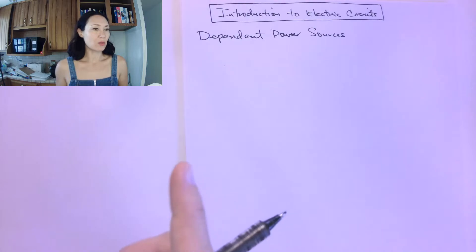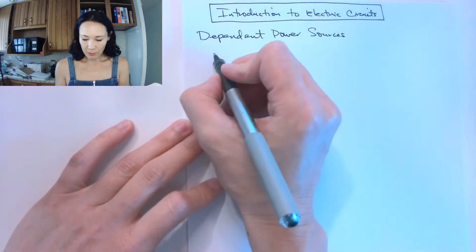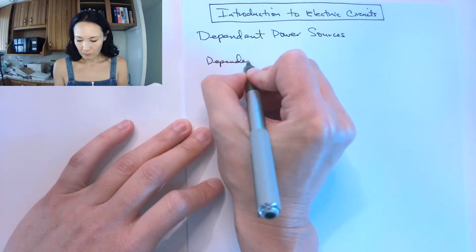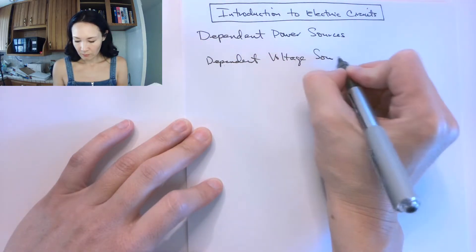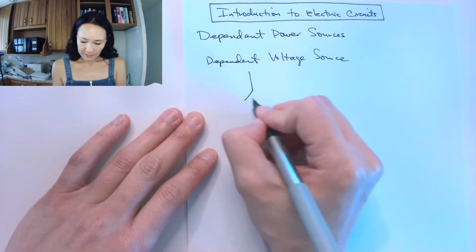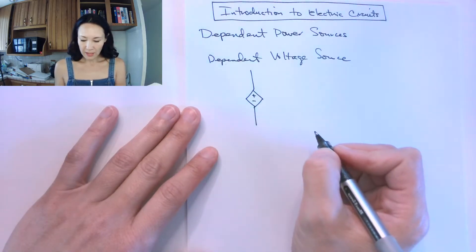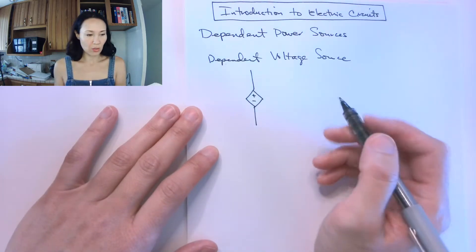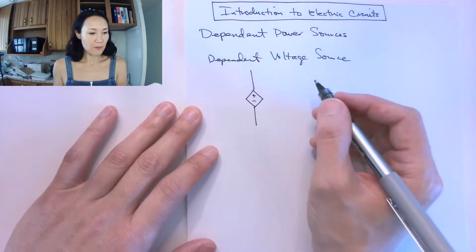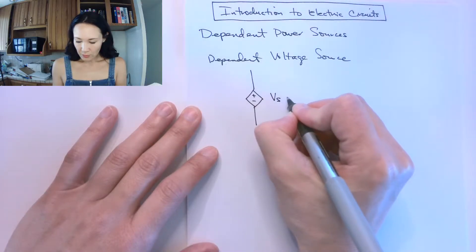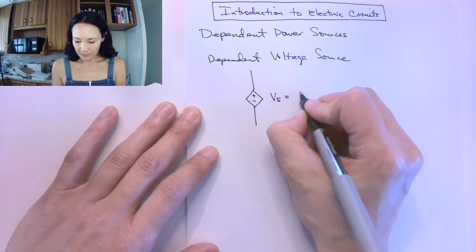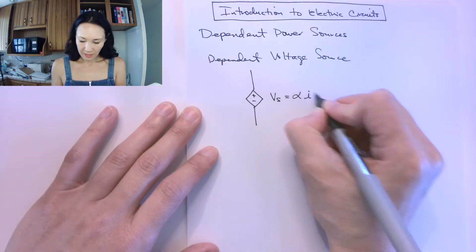But dependent power sources are a little bit different because they depend on a current or voltage value that exists somewhere else in the circuit. For example, a dependent voltage source is going to have the schematic symbol like this—it's a diamond instead of a circle. There will be a plus and minus to indicate which direction the current is emanating from, and then the value of the voltage that comes out will be some kind of constant times something else in the circuit.